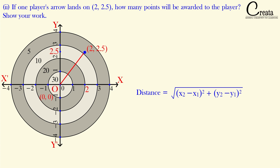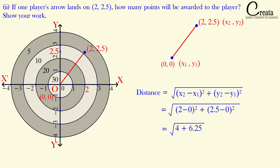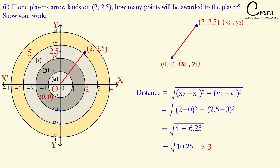If the distance is 3 or less than 3, the point is in the 10-point zone. If the distance is greater than 3 units, it is in the 5-point zone. Applying the distance formula with origin (0,0) and point (2, 2.5), we get the distance as √10.25. Since 3² = 9 and √10.25 is above 3 — approximately 3.2 — the distance is more than 3 units. So the point lies in the 5-point zone, and the player gets 5 points.